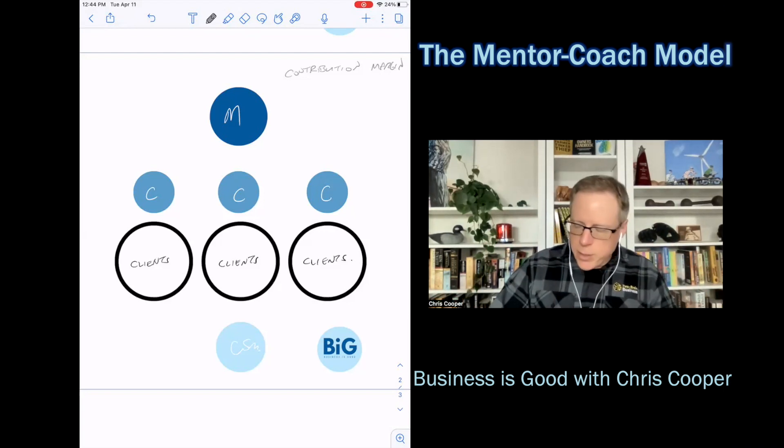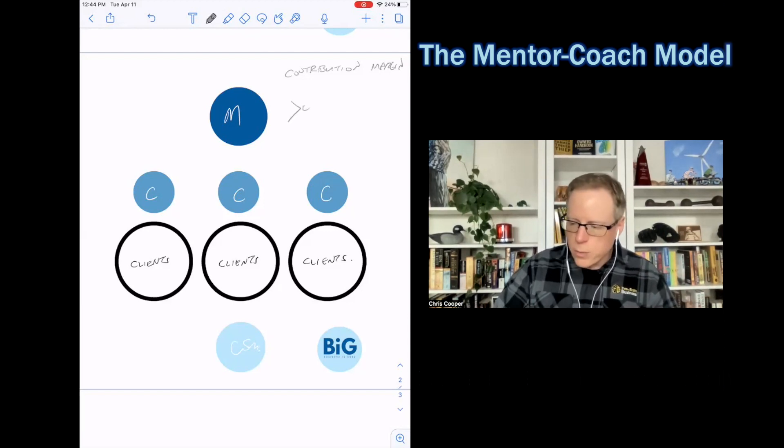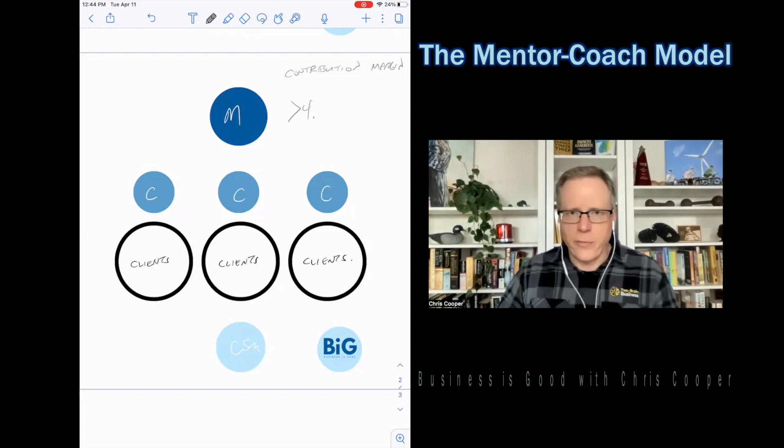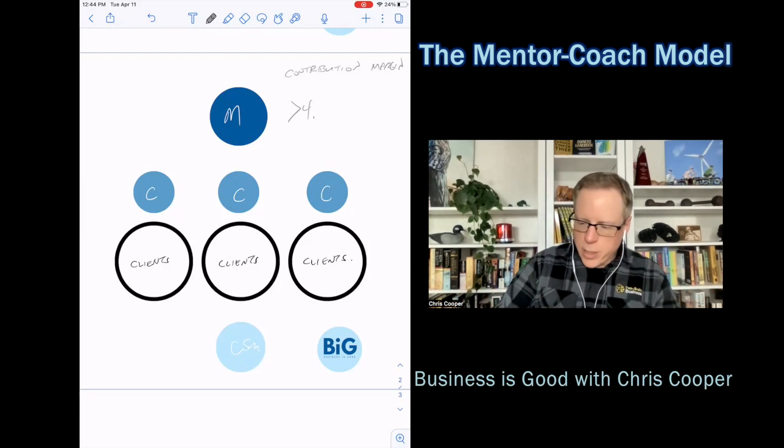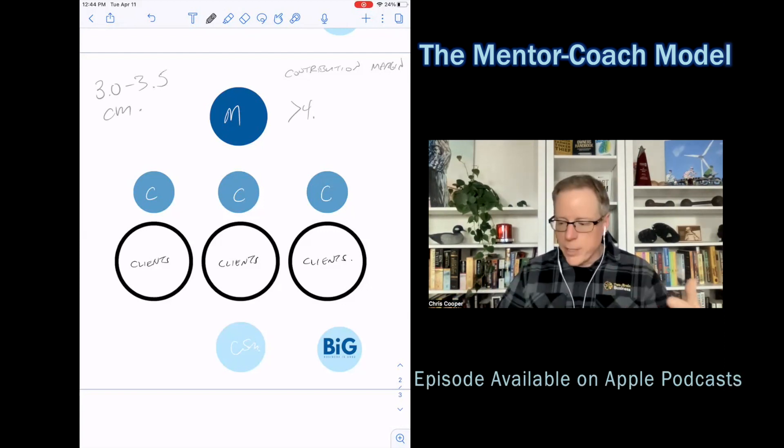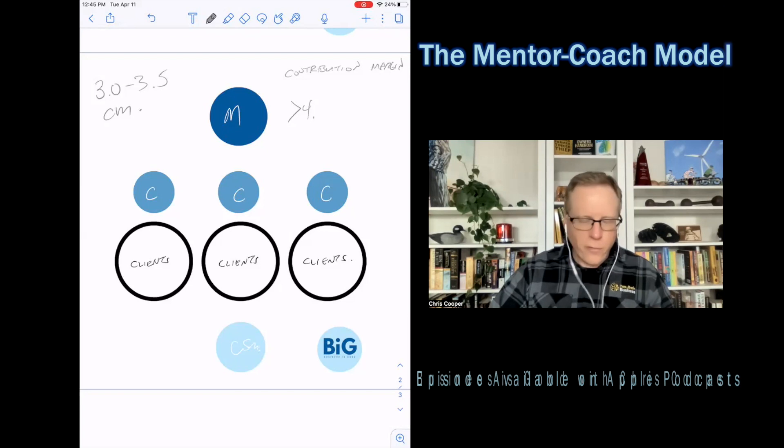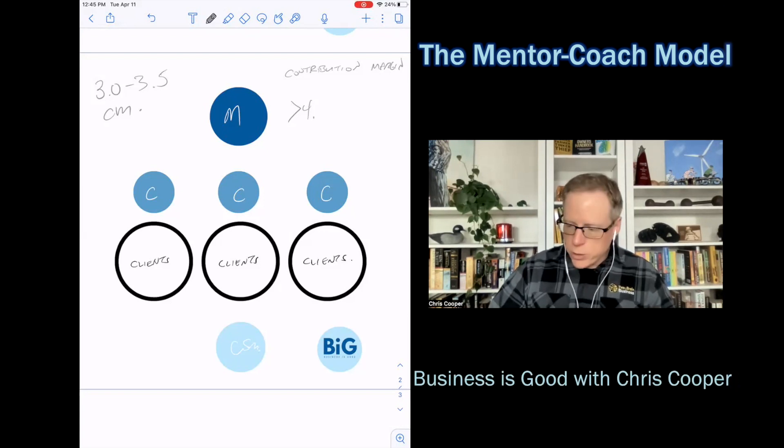And that contribution margin is going to change because different levels here will serve different amounts of people. So for example, contribution margin on your primary staff should usually be over four. So you pay them a dollar for every four you collect. Overall in your entire business, your contribution margin target is three to 3.5 contribution margin. There are going to be some roles in your business that don't generate revenue, but the mentors and the coaches do. So what we're looking for here is a labor efficiency ratio or contribution margin of about four on a mentor, but it can be much higher on a coach. So it might actually be like 12 on a coach and it could be as high as 24 on a CSM.